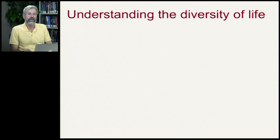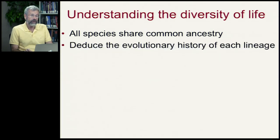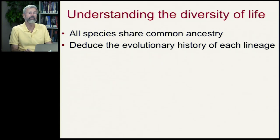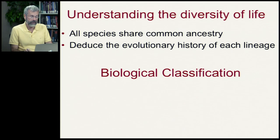To understand the diversity of life, we first start with the assumption that all species share a common ancestry. Based on this, we then work out how these lineages may have derived and what the relationships are between modern species. To do this, we use a process we call classification.